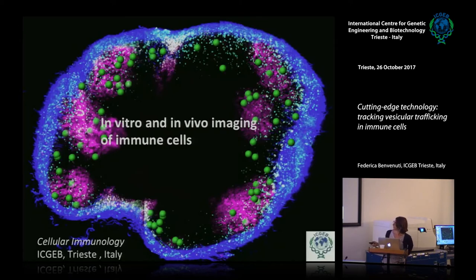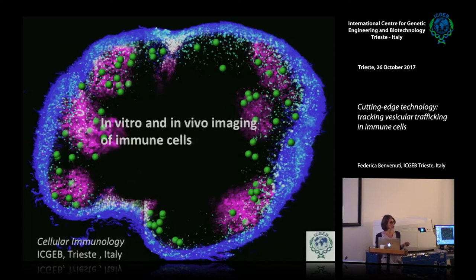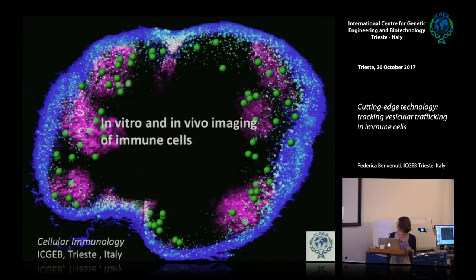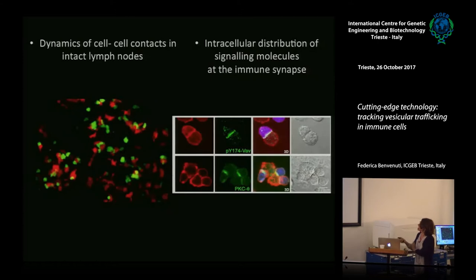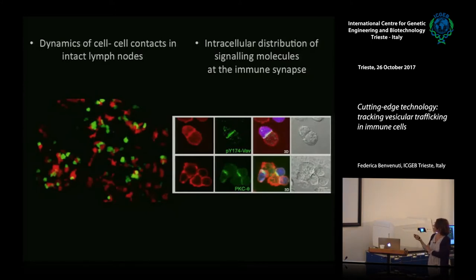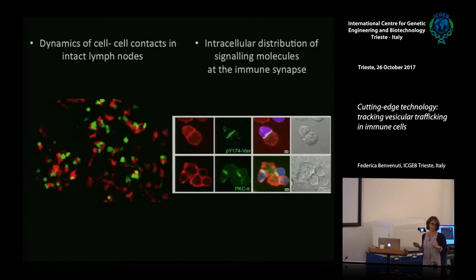This is a nice picture of a lymph node. These reactions occur in complex, highly structured, and organized tissues — immune communication takes place in organized tissues. That's why it is really important to look at what's going on in tissues. I'm going to tell you a little bit about the dynamics of immune cell interactions in vivo, and then we will go down to the cellular, subcellular, and molecular level.